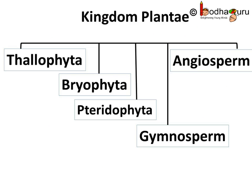Hello everyone! Now we know that the Plantae Kingdom has five divisions, namely Thallophyta, Bryophyta, Pteridophyta, Gymnosperm, and Angiosperm. Now, is there an easy way to remember these five divisions? How to classify plants into these five divisions? Let us follow a systematic and structural approach.